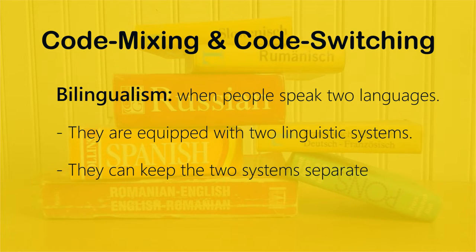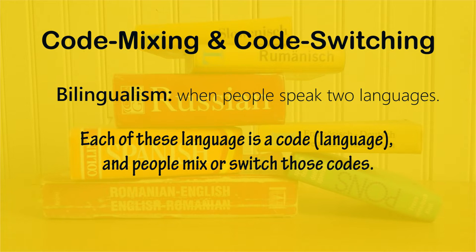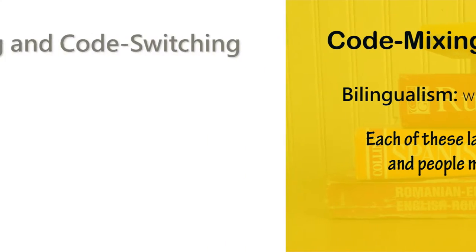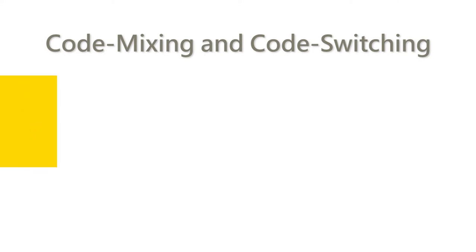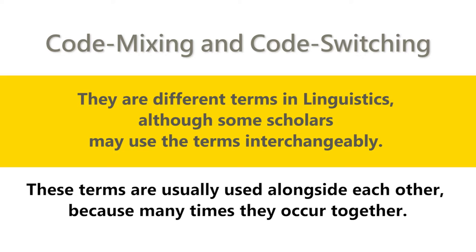Bilinguals can keep these two systems apart from each other, but depending on the circumstances, many people end up mixing the two languages. Each language is a code, and people mix their languages — that's language mixing or code mixing. Code mixing and code switching don't always mean the same thing, although some scholars use them interchangeably depending on their theory. A lot of times you hear them together because they can occur together, but there is a distinction to clarify.